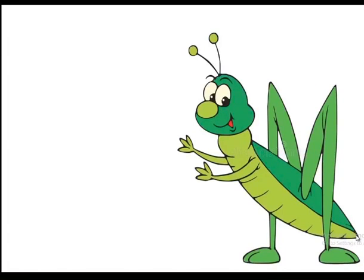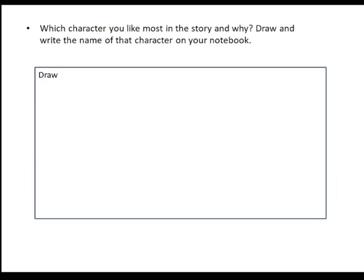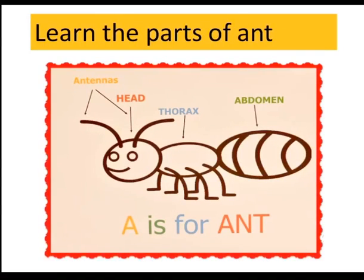It's your activity time. Which character do you like most in the story and why? Draw and write the name of that character on your notebook. First retell the story, then answer those questions, and then solve this activity. The second activity is to learn the parts of an ant. An ant has also body parts as humans do. An ant has two antennas, a head, a thorax, and an abdomen — four parts. You can draw the ant and its parts on your notebook as well. I hope you liked this story.